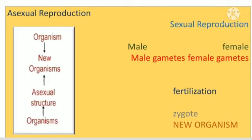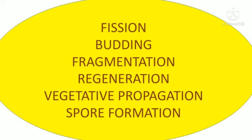Whereas in asexual reproduction, a single organism gives rise to new organisms. An organism can reproduce without the involvement of another organism. Organisms can reproduce asexually in many ways.